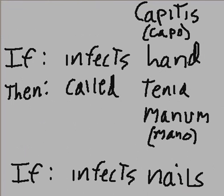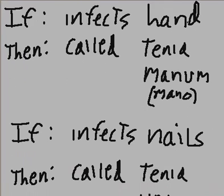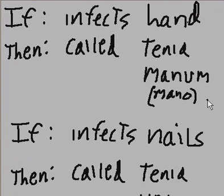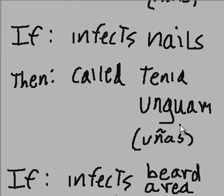If it infects the hand, then it is called tinea manuum. And 'manum' in Latin becomes 'mano' in Spanish. If it infects the nails, then we call it tinea unguium. In Spanish it becomes 'uñas,' meaning fingernails — a fungal infection of the nails.